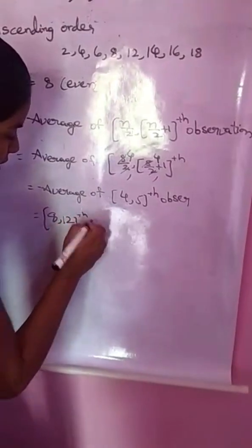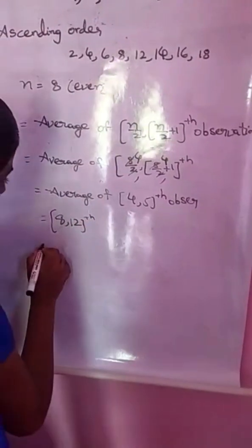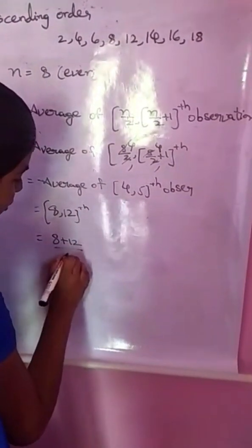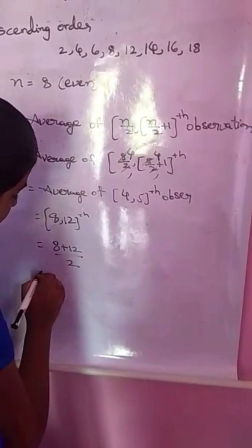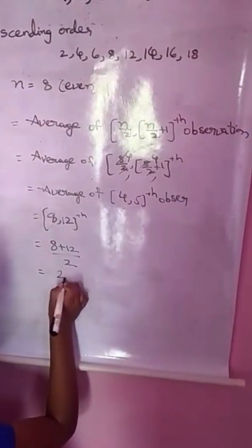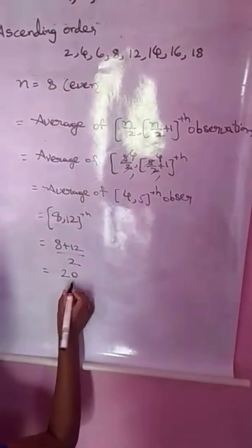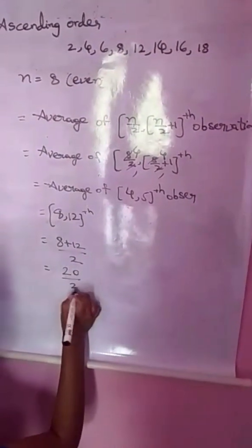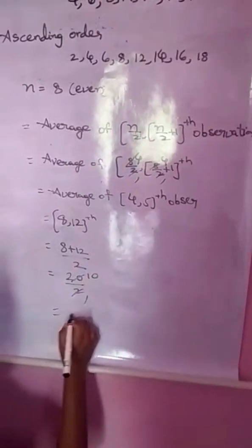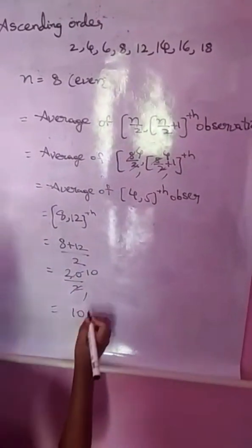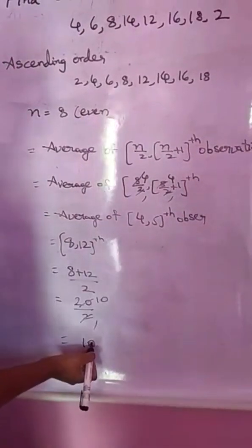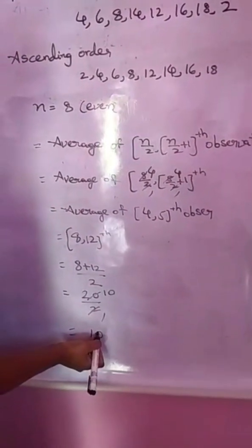Now: 8 plus 12 by 2 equals 20 by 2 equals 10. The answer is 10. In shortcut, the answer is 10.